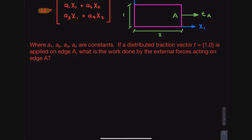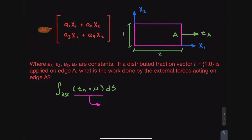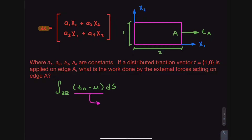When I look at this, I see two things: a dot product that I need to tackle, and a surface integral to deal with. The first thing is to solve the dot product. We take the first component of one vector multiplied by the first component of the other. So dotting the traction vector with the displacement vector: multiply the first components — the traction vector's first component is 1, and the displacement vector's first component is A1·x1 + A2·x2.